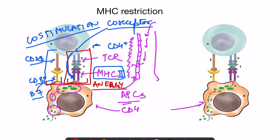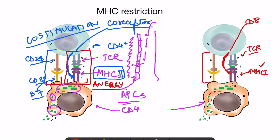This two-signal requirement is important because drugs have been made that block co-stimulation and render T cells inactive, useful as immunosuppression strategies. For CD8 cytotoxic T cells, presentation is by MHC1. MHC1 is present on all nucleated cells of the body, while MHC2 is only on antigen-presenting cells. All nucleated cells can present to CD8 cytotoxic T cells via MHC1. Again, co-stimulation with signal 1 and signal 2 is required for activation.